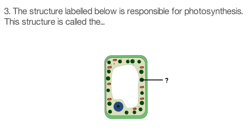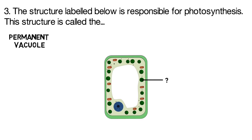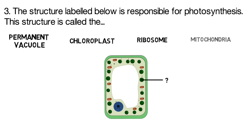Question three. The structure labelled below is responsible for photosynthesis. The structure is called the permanent vacuole, chloroplast, ribosome, or mitochondria?